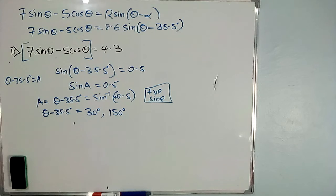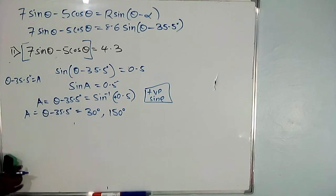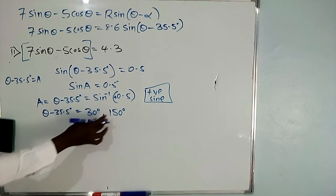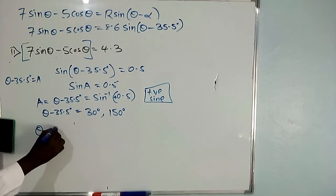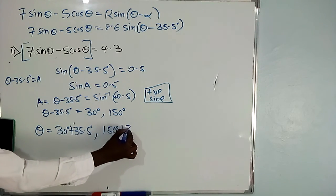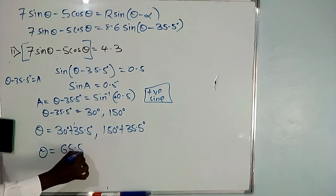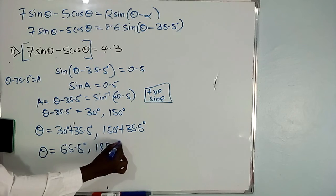Since A = theta minus 35.5 degrees, we have: theta minus 35.5° = 30° or theta minus 35.5° = 150°. Adding 35.5° to both sides: theta = 30° + 35.5° = 65.5° or theta = 150° + 35.5° = 185.5 degrees.